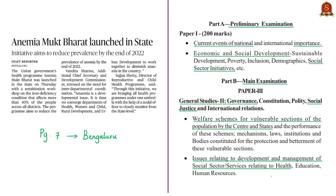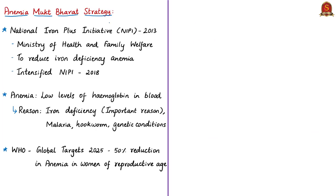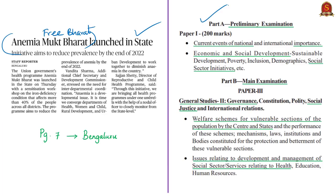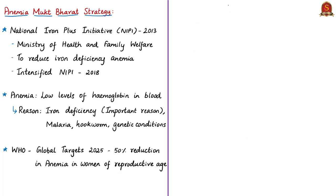The fifth news article talks about Anemia Mukt Bharat Strategy, announced by the Union Ministry of Health and Family Welfare under the Intensified National Iron Plus Initiative, launched in the state of Karnataka. The National Iron Plus Initiative was launched in 2013 by the Ministry of Health and Family Welfare to combat iron deficiency anemia. In 2018, it was rechristened and reconstituted as the Intensified National Iron Plus Initiative, under which the Anemia Mukt Bharat Strategy falls.